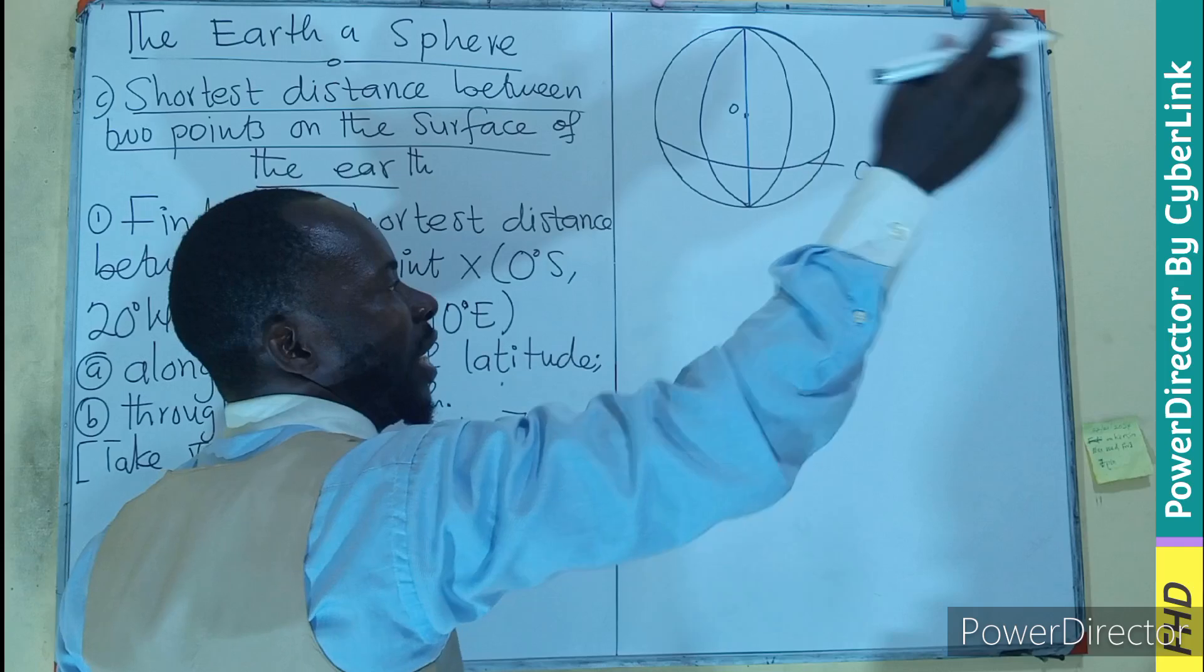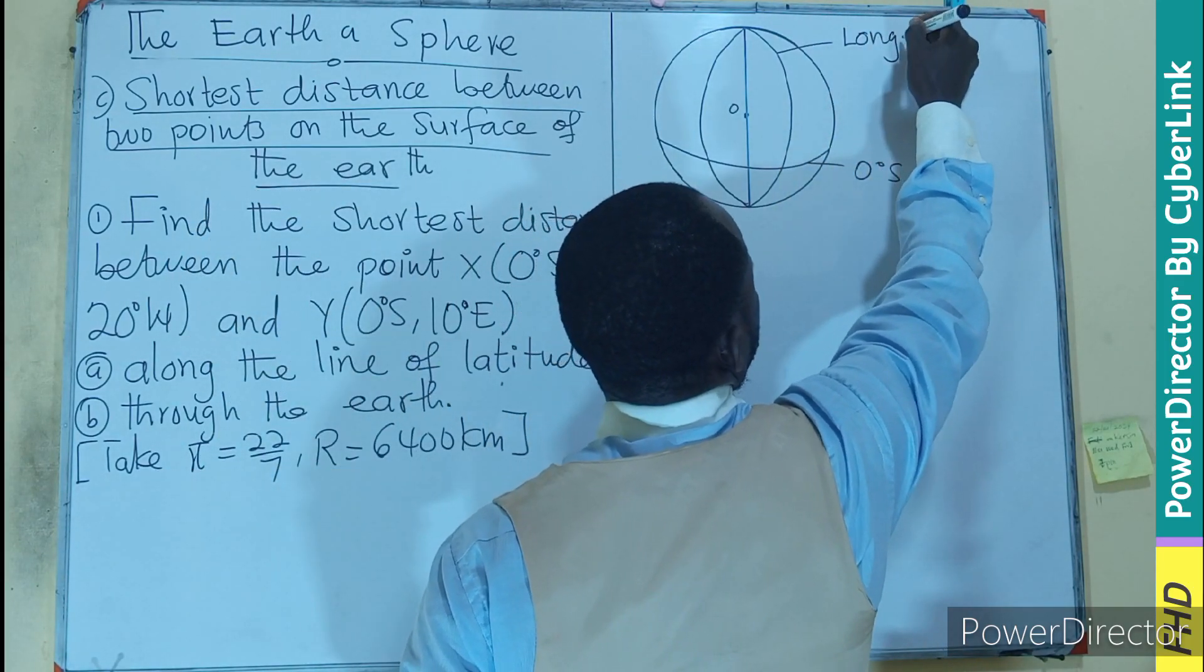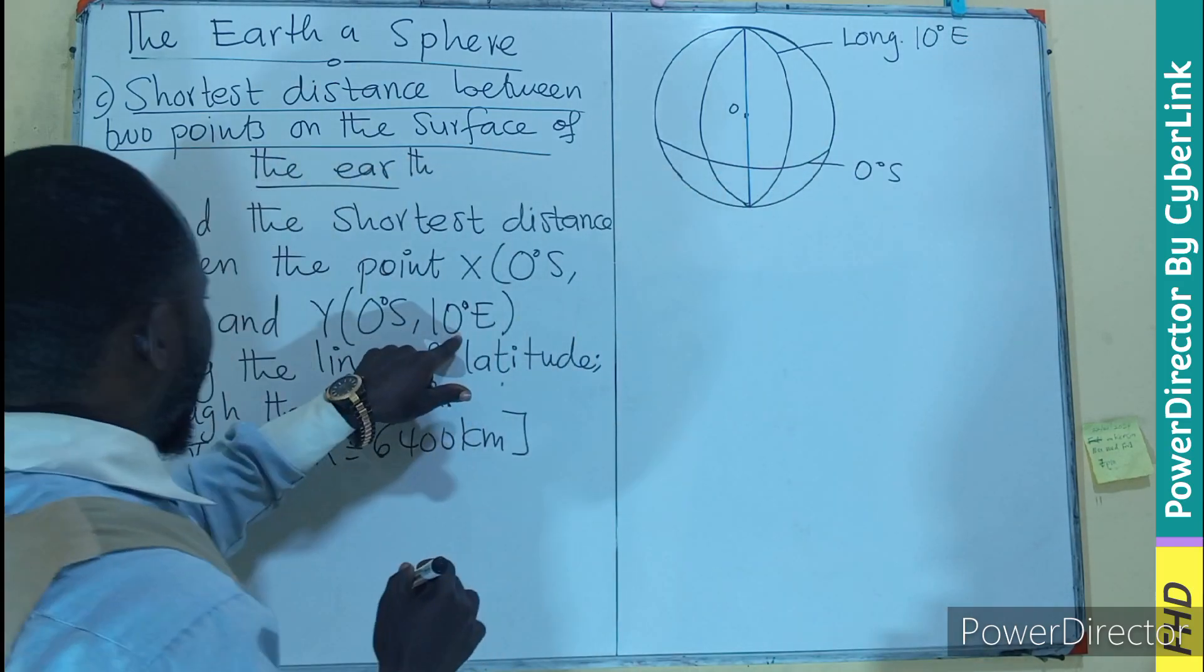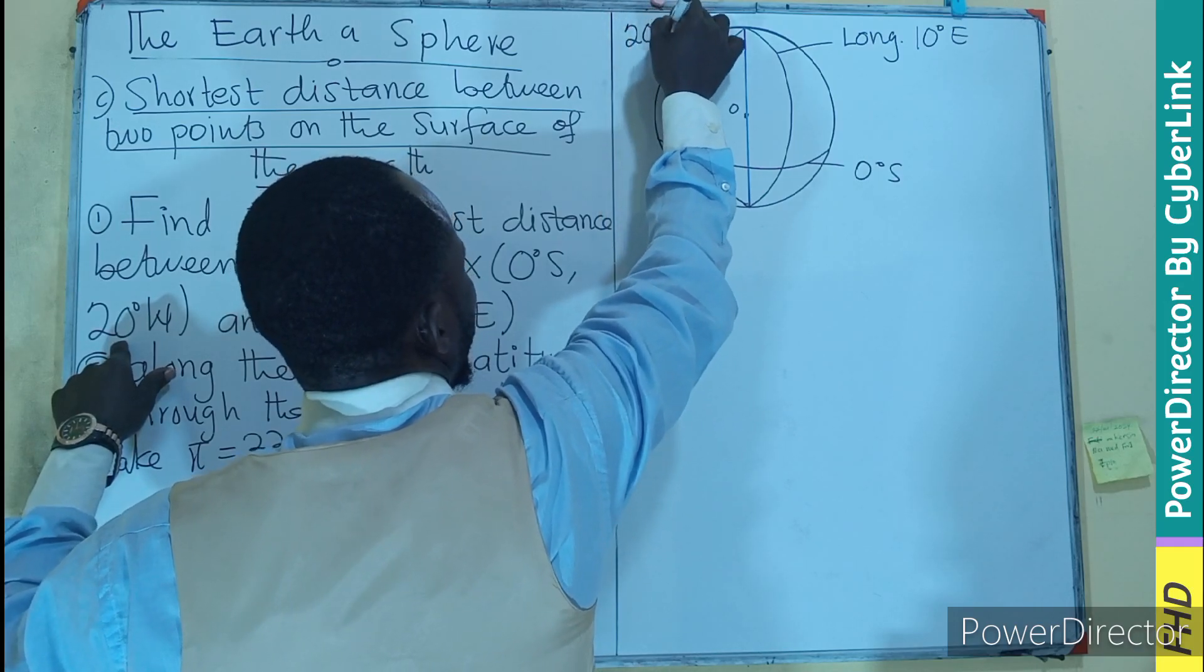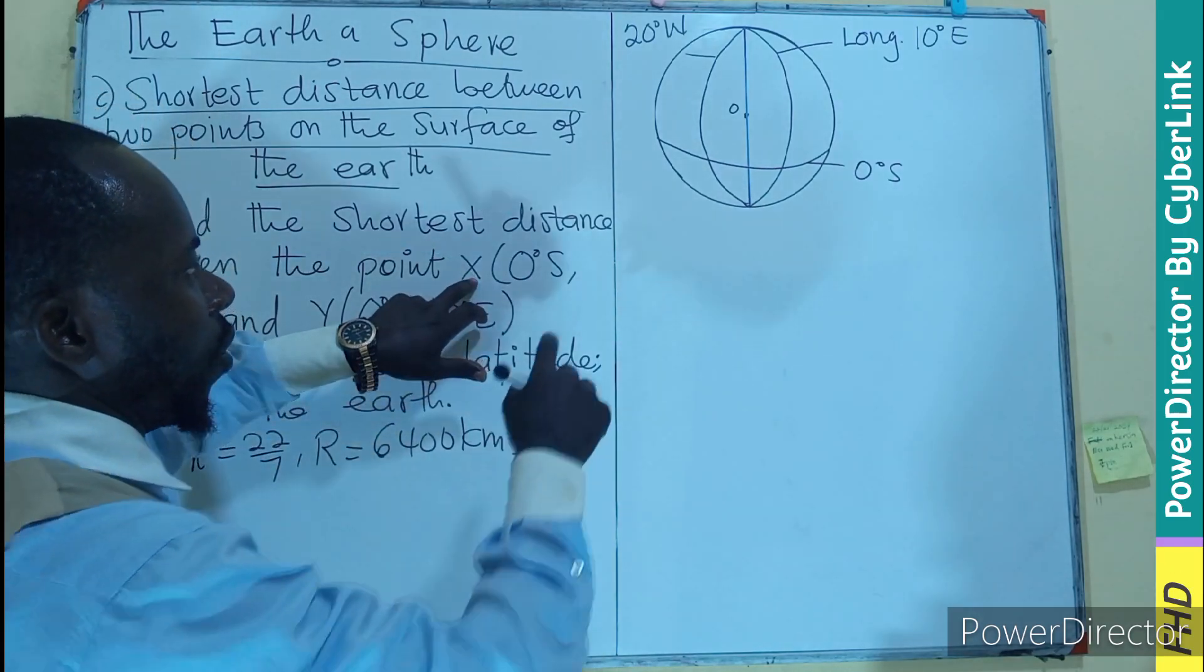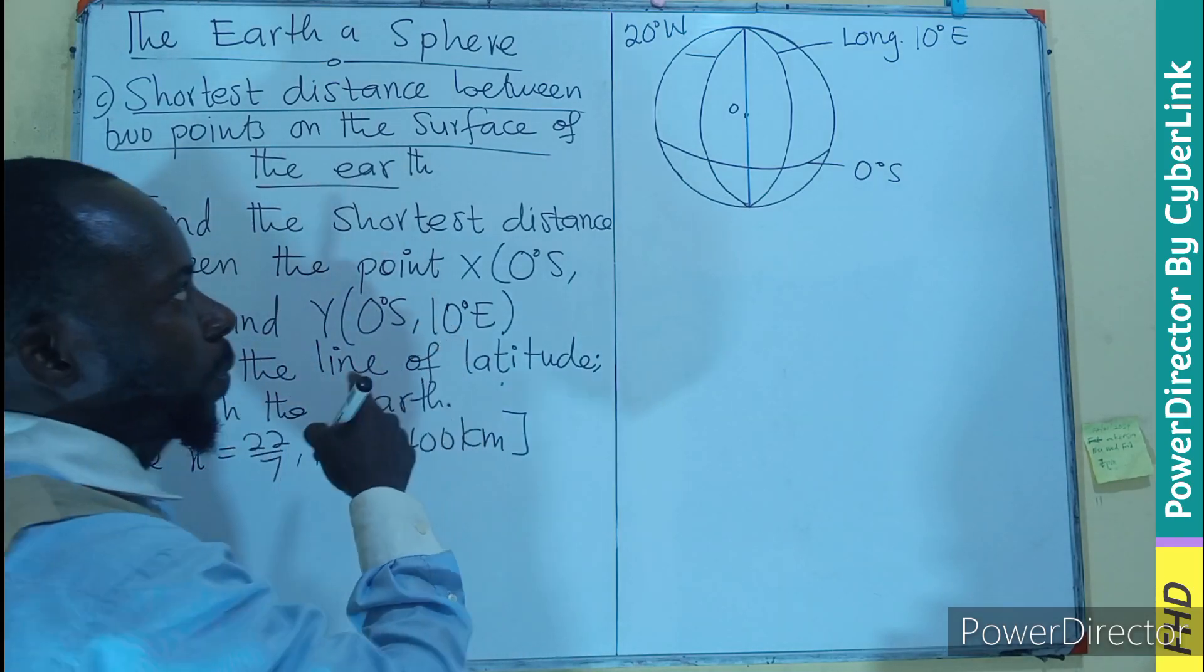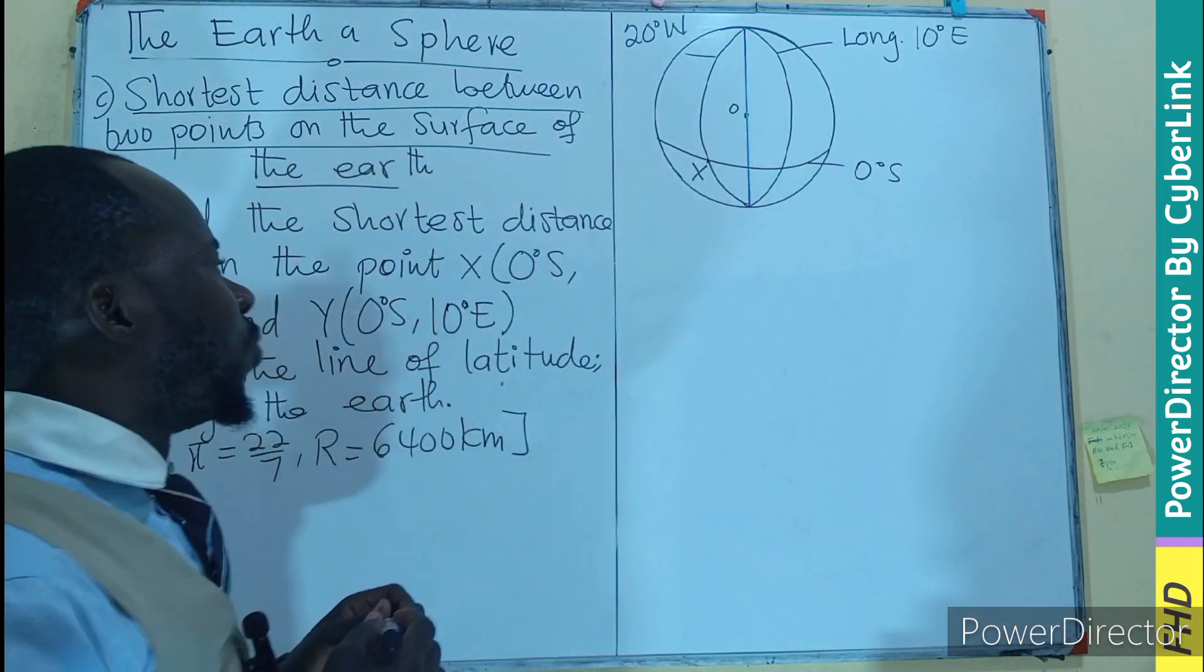Then this is going to be longitude to the east. So this becomes longitude 10 degrees east. Then we have 20 west. So which point are we going to place first? The X. So on the 0 latitude, on 20 west longitude. So this is the 20. It meets the latitude here. So point X is going to be there.